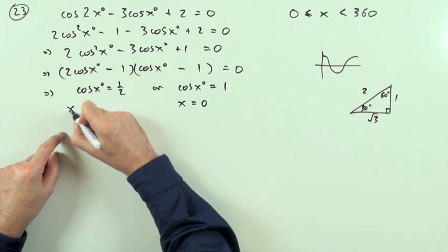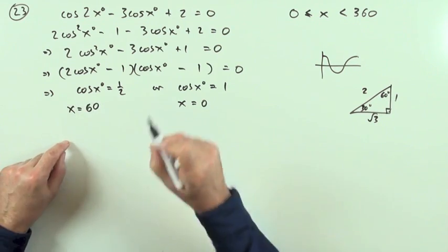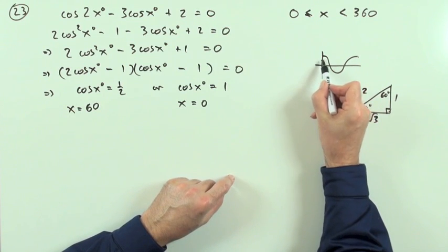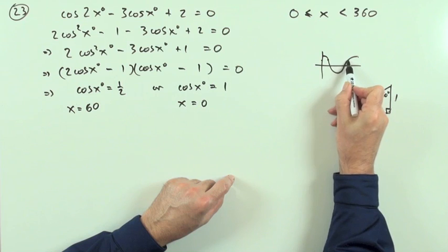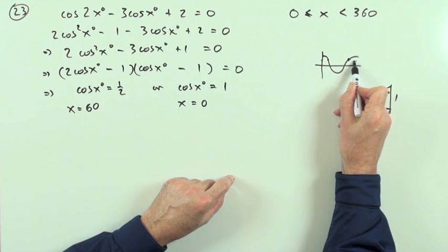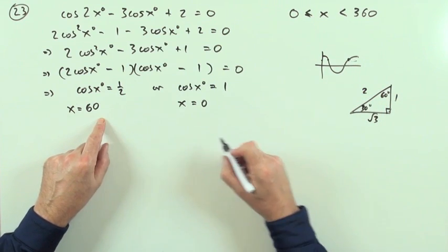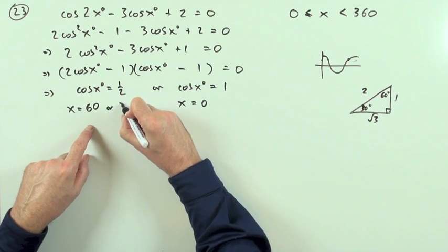When is the cos a half? Well, that means the cosine is adjacent to the angle, so the one next to the 60. So that means either x is 60, or you can think of the graph: cosine equal to a half there at 60, or doesn't happen again till near the end at the same distance back, so 360 minus 60.